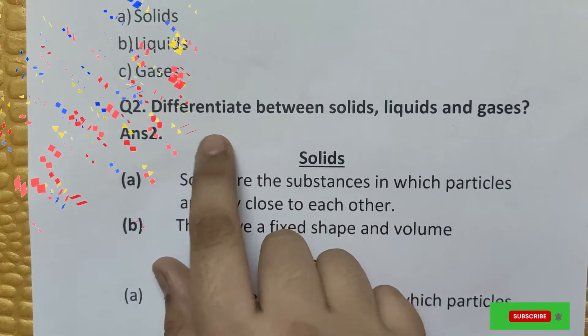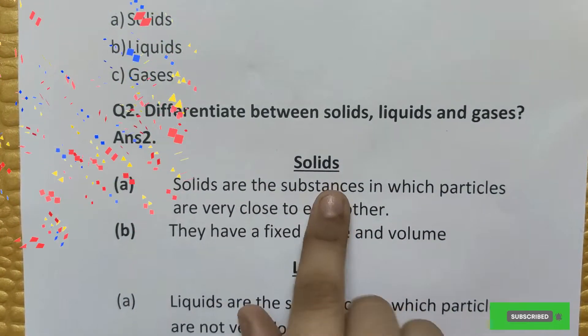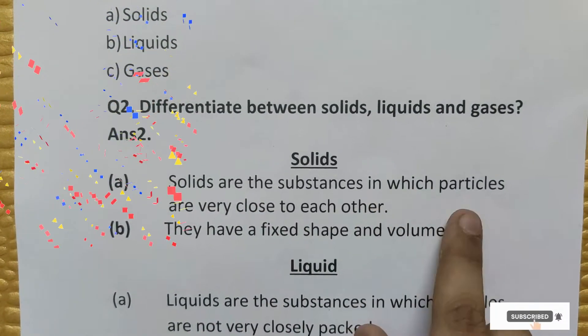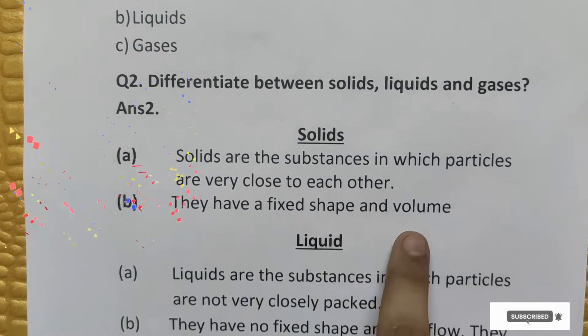Question number two: Differentiate between solids, liquids and gases. Answer. Solids: (a) Solids are the substances in which particles are very close to each other. (b) They have a fixed shape and volume.